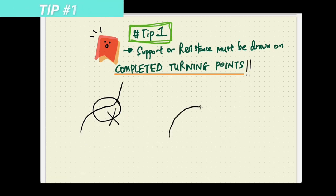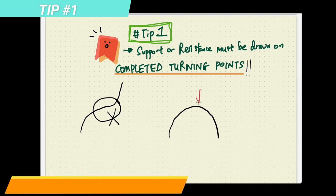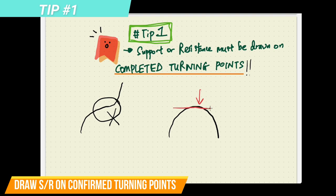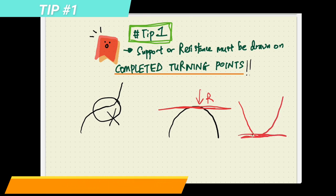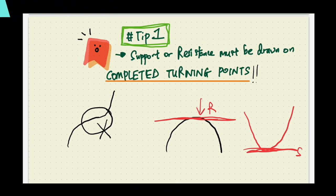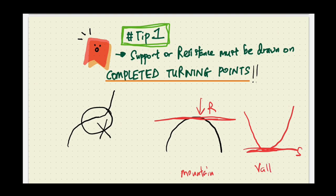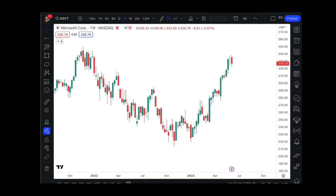Is this a turning point? Yes — this is a turning point because this point here looks like a mountain, an inverted U-shape. For a turning point to identify support or resistance, you must be able to spot this shape. It must be drawn on a confirmed turning point. This would be a resistance, and a confirmed turning point for support resembles a U-shape — that would be your valley. To repeat: it must be drawn on completed turning points, either a mountain for resistance or a valley for support.